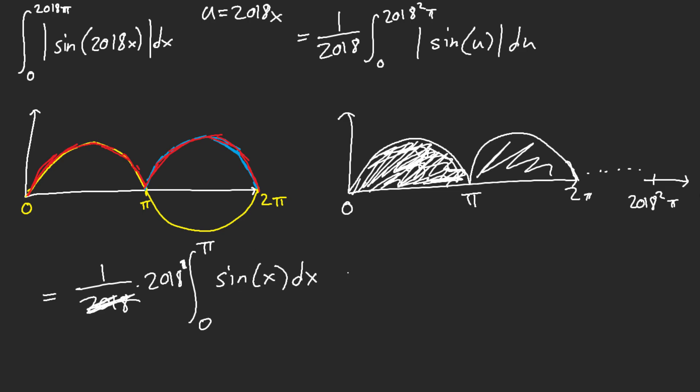And then, this is negative cosine of x, which I'll just go ahead and do that. Oh, no, I'm sorry, just 2018. Negative cosine of x from 0 to pi.